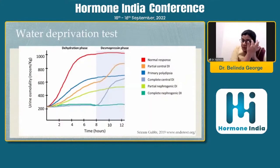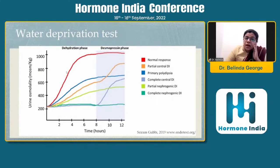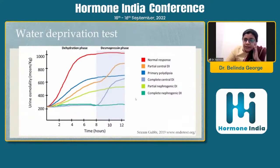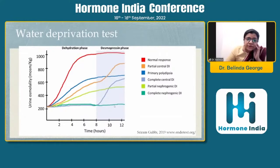What have we been doing all these years? We have been using the water deprivation test to differentiate between various forms of DI. A normal person will see urine osmolality rise and reach a peak, and even with desmopressin it cannot further rise because the patient has reached maximum concentrating ability. In complete nephrogenic DI, urine osmolality doesn't rise even with water deprivation or desmopressin. In complete central DI, urine osmolality stays low with deprivation but shows a nice response once desmopressin is given.